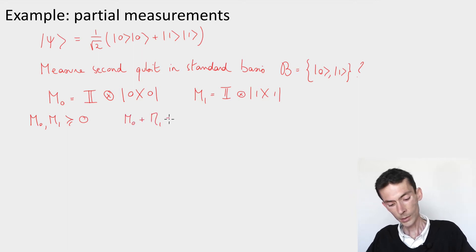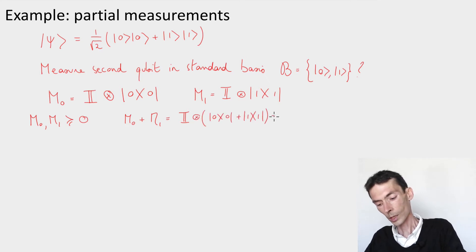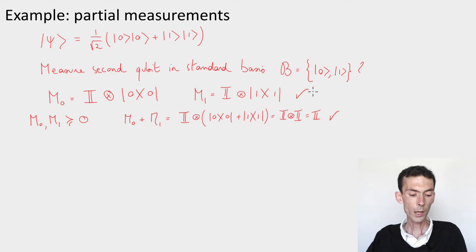So let's verify this. M₀ plus M₁ is equal to, well, identity tensored |0⟩⟨0| plus |1⟩⟨1|. And that is simply equal to identity tensor identity, which indeed equals identity. So M₀ and M₁ together form a valid POVM.